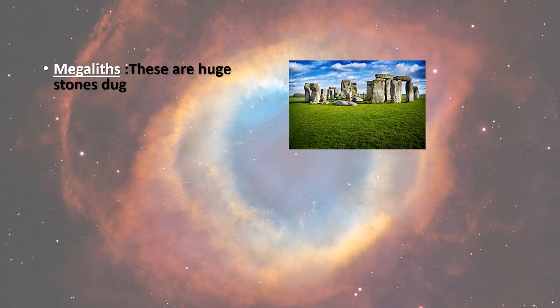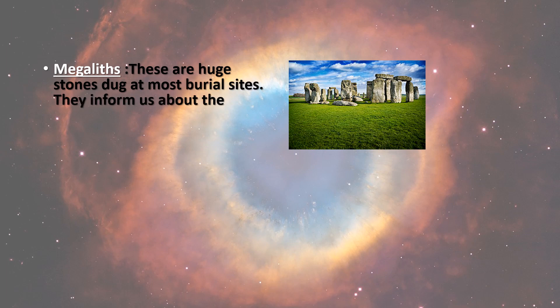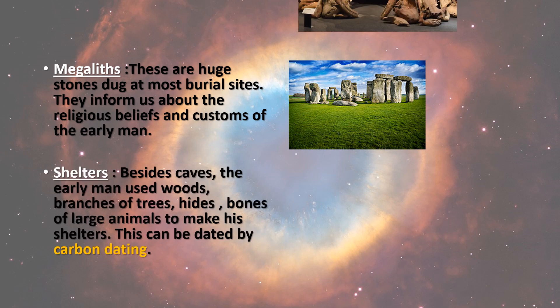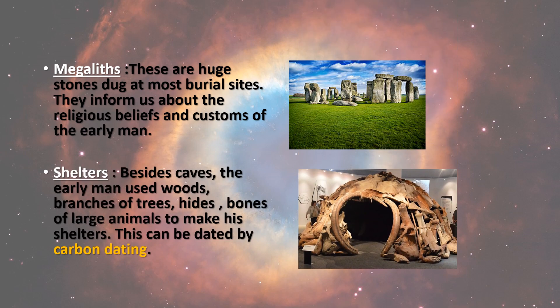Megaliths are huge stones dug at burial sites. They inform us about the religious beliefs and customs of early men. Next is shelters. The evidences of their shelters have shown that they used woods, branches, etc. to make their homes. This can be predicted by carbon dating. Carbon dating is a technique to know the age of archaeological sources.